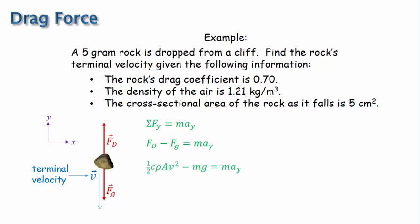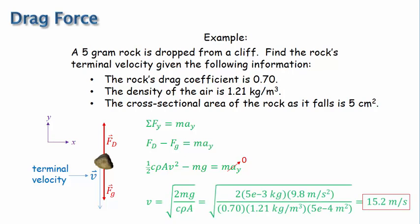And now we make the important recognition that since the rock has reached terminal velocity, then its acceleration must be zero. And so now we can solve this equation for velocity and plug in values and find that the rock's terminal velocity is 15.2 meters per second, which is around 34 miles per hour.